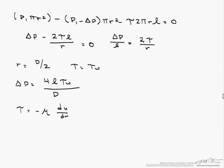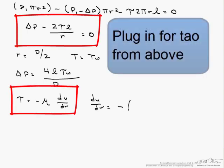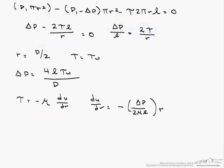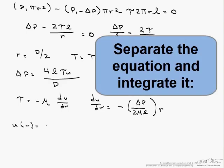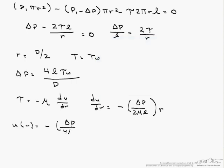So putting this together, we can write du/dr equals negative delta P divided by 2 times mu times l, all times r. We end up with u of r equals minus delta P over 4 times mu times l, r squared plus c1.